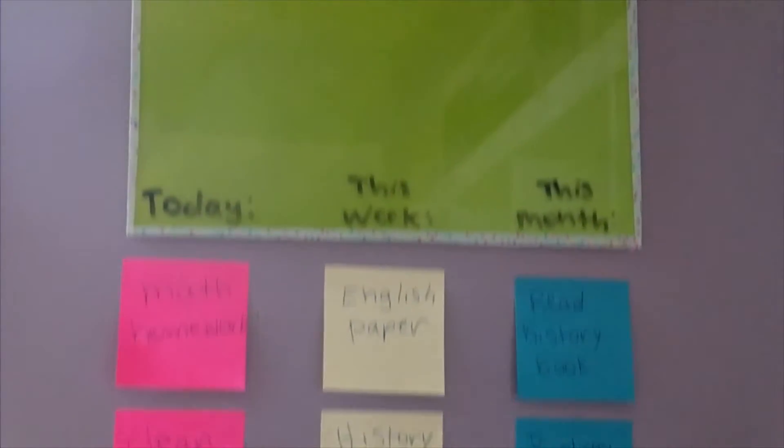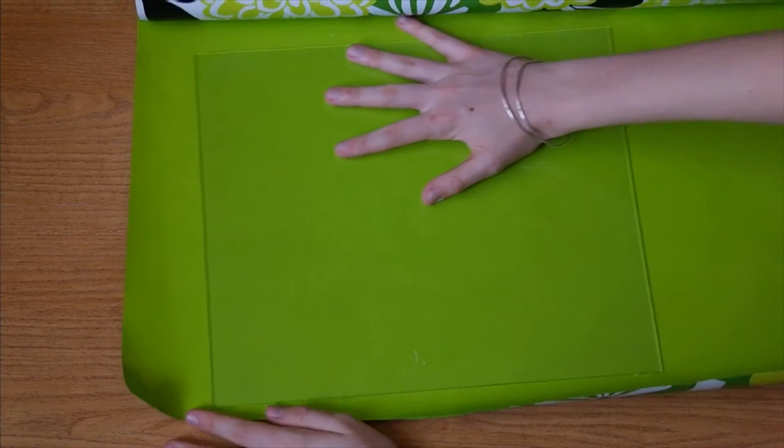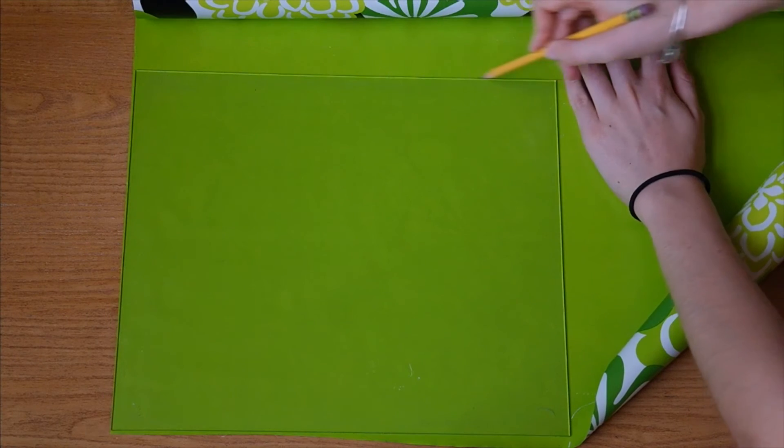The third DIY organization idea is this dry erase and sticky note wall reminder. Take the glass out of a picture frame and if you'd like you can cover it with scrapbook or wrapping paper.